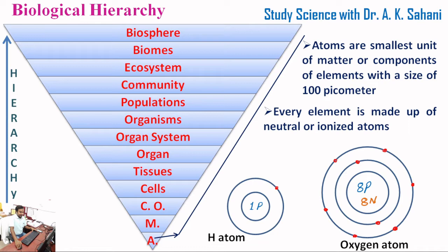The first and lowest level in this biological hierarchy is atom. Atoms are the smallest unit of matter, or components of elements, with a size of 100 picometers. Every element is made up of neutral or ionized atoms. As you see here, in a hydrogen atom one proton and one electron is present, while in an oxygen atom eight protons, eight neutrons, and eight electrons are present.